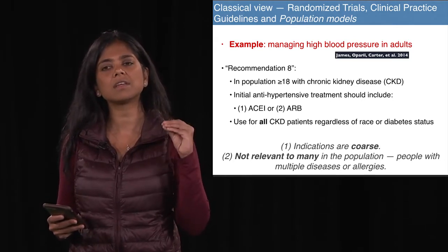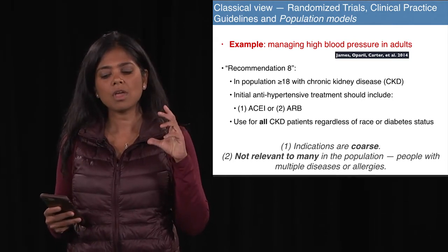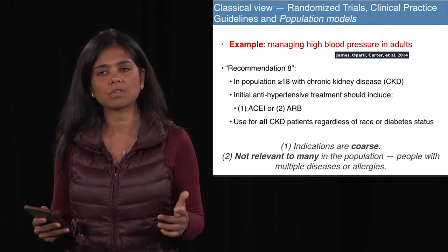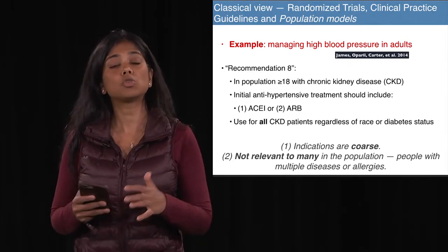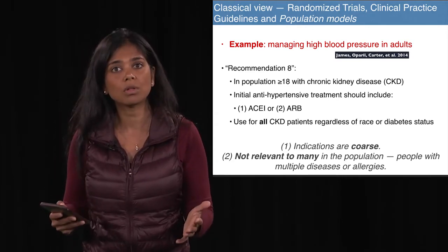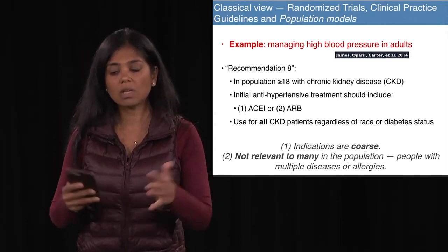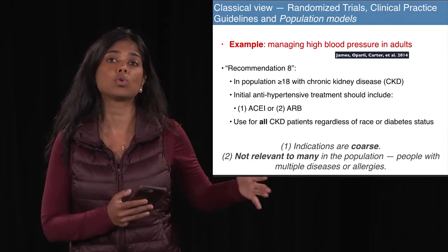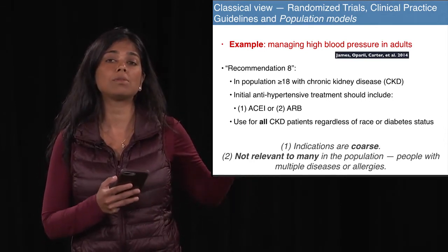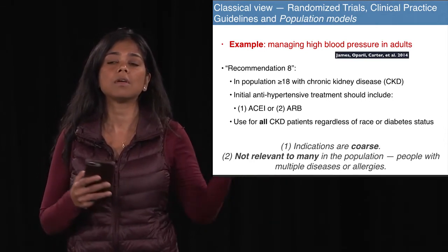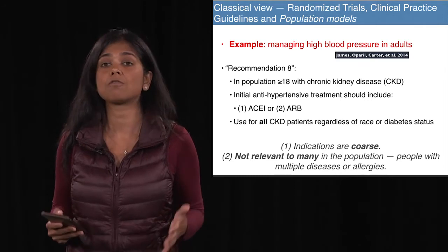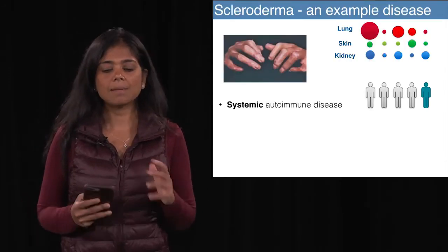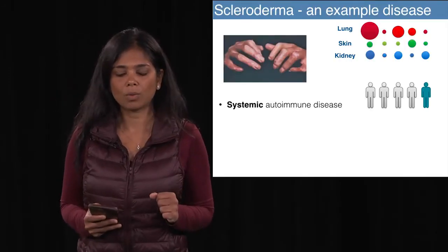Clinical trials are very coarse — they contain recommendations based on just two, three, or four attributes. As more and more granular data gets collected in digital repositories like electronic health records, it should be possible to develop recommendations that are far more tailored to the individual.